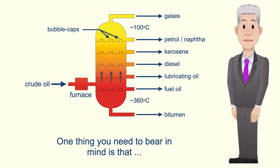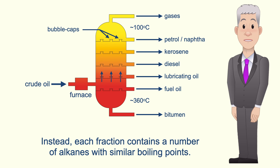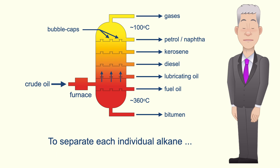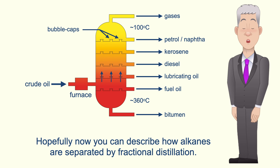One thing to bear in mind is that fractional distillation does not separate each individual alkane. Instead, each fraction contains a number of alkanes with similar boiling points. To separate each individual alkane would require further rounds of fractional distillation. Hopefully now you can describe how alkanes are separated by fractional distillation.